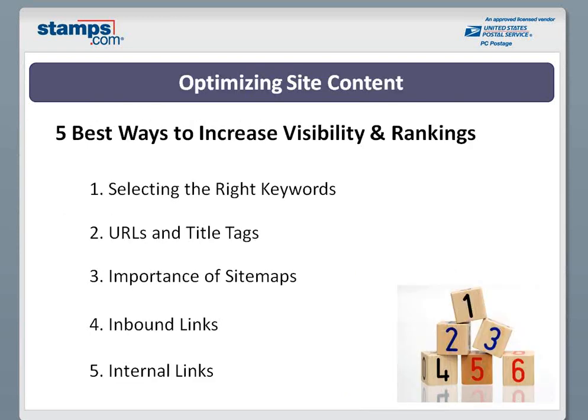The top five best ways to increase visibility and ranking by optimizing your site content: number one, selecting the right keyword; number two, URLs and title tags; number three, the importance of sitemaps; number four, inbound links; and number five, internal links. We'll give you more details on each of these separately.